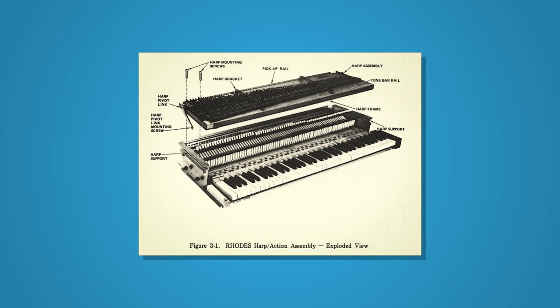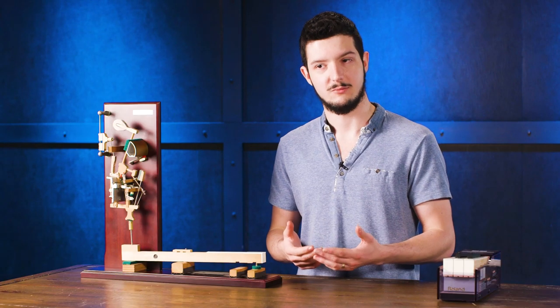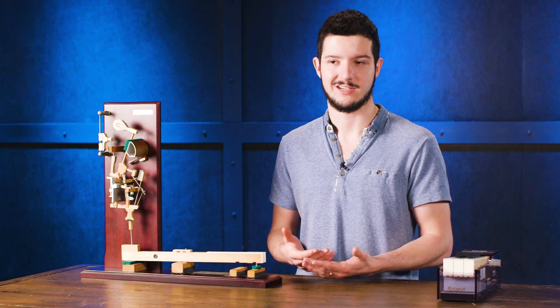Other instruments have employed different materials for the keybed. For example, the Rhodes Electric Piano's keybed was an aluminum bar with a plastic bumper, which, interestingly, was manufactured by Wurlitzer for several years.